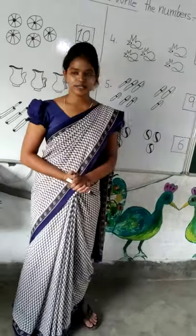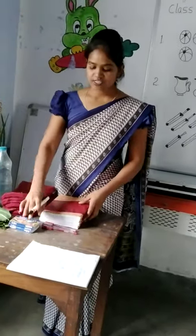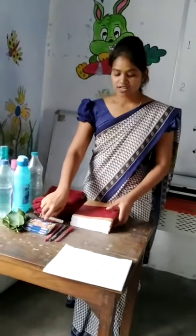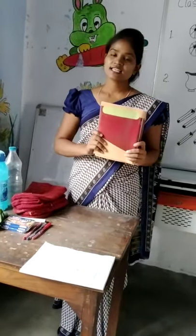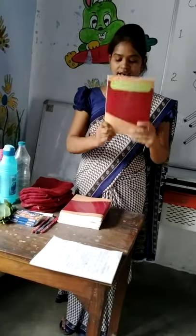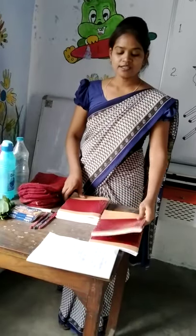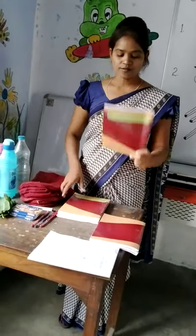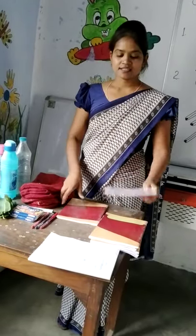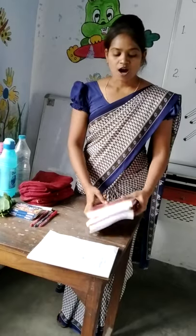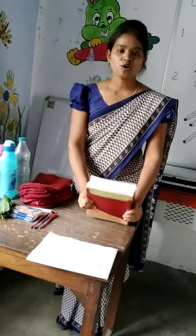Now my best students, I have collected some objects for you. First we will count how many objects I have. I have collected some poppies. Let's start counting. 1, 2, 3, 4, 5, 6, 7. How many poppies do we have? I have 7 poppies.